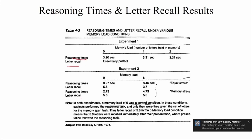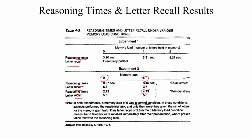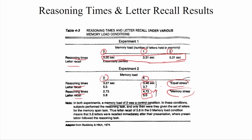Baddeley and Hitch in 1974, and Baddeley alone in 1991, found that there was no common system for all cognitive processes — no single short-term store available for all kinds of cognitive processing. Also, lower memory load did not disrupt performance. If two tasks were given and one required little memory load, performance on the second task was not hindered. Reasoning times increased from about 3.31 seconds to almost 5 seconds as load increased from 0 to 6, demonstrating that parallel task processing can happen.